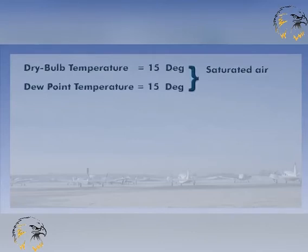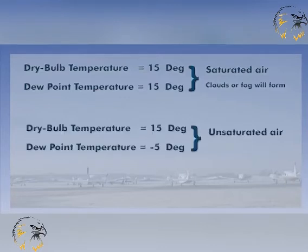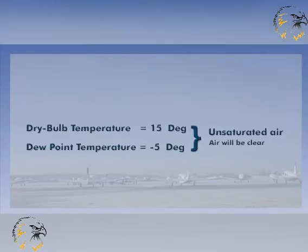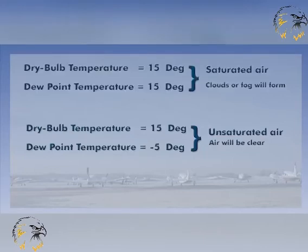When the dry bulb temperature equals the dew point, there is 100% humidity, or saturation. Hence, cloud or fog will form. If the dry bulb temperature and the dew point are many degrees apart, the air is relatively dry. In fact, at saturation, the dry bulb, wet bulb, and dew point temperatures are all exactly the same.